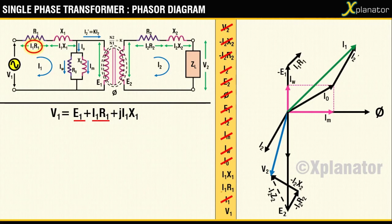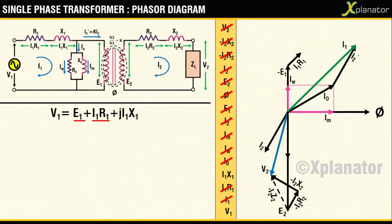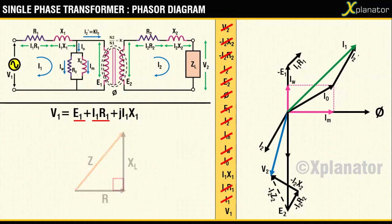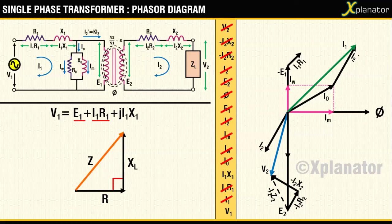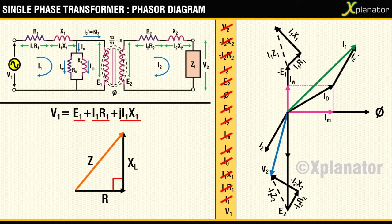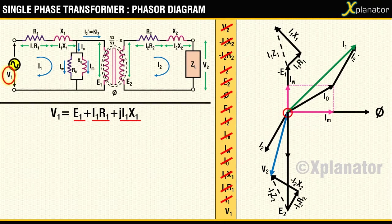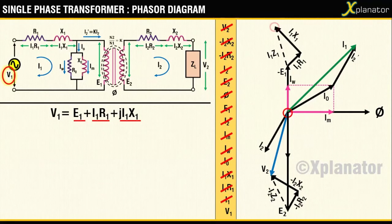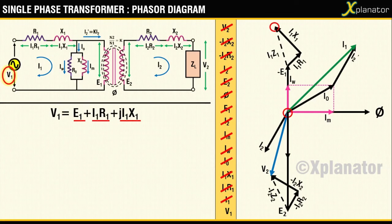The last term in the equation is to be drawn using the impedance triangle, just like in the previous case. So I1X1 goes 90 degrees leading I1R1. The origin is where the first term, that is minus E1, was drawn, and the last term, I1X1, has ended here. Join the start and the end points to get the resultant vector V1.